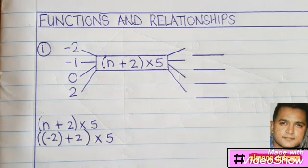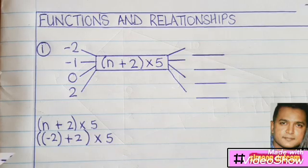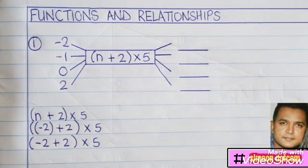Under exam conditions, sometimes we tend to rush and make unnecessary mistakes. In this step here, you see I put the number minus two directly in place of the letter n, and I've placed that in brackets. This is correct substitution procedure. In the next step, all I've done is remove the brackets.